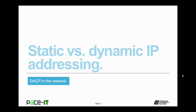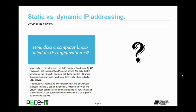We begin by talking about static versus dynamic IP addressing. How does a computer know what its IP configuration is? Well, more than likely, a computer received its IP configuration from a Dynamic Host Configuration Protocol server. Not only did the server give the PC an IP address, but it also told the PC where the default gateway was, and more than likely, how to find a DNS server.